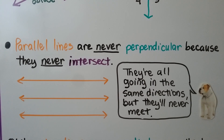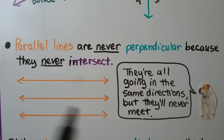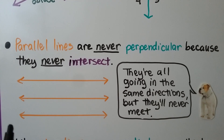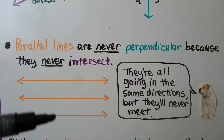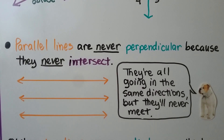Parallel lines are never perpendicular because they never intersect. They would have to intersect and make right angles to be perpendicular — but they never meet. These three lines are all going in the same direction but they'll never meet, they'll never cross. These are parallel lines — we can have more than two; we have three parallel lines here.